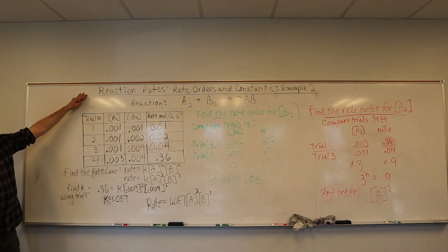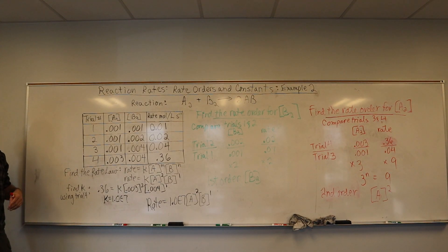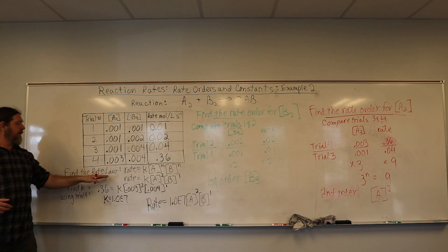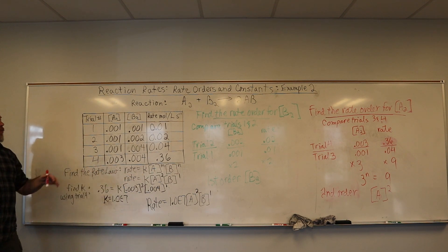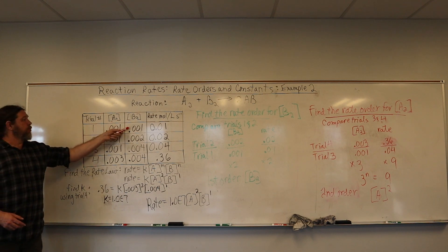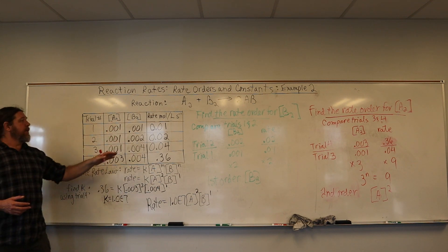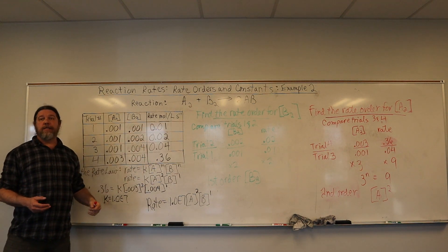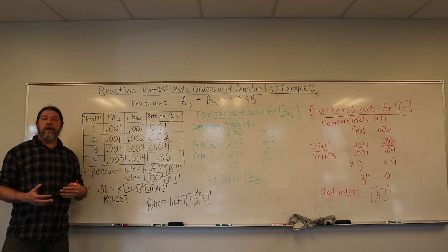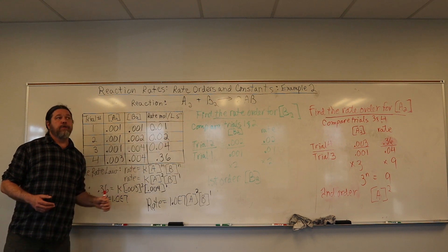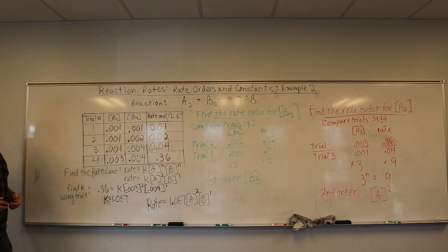Let's take a look at another example of how we can determine a generalized rate law for a particular reaction based on experimental data where we are manipulating the concentrations of the reactants on a molar level to get a molar change in rate of reaction per second.